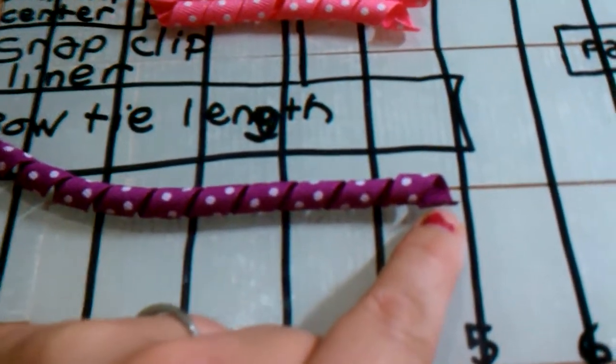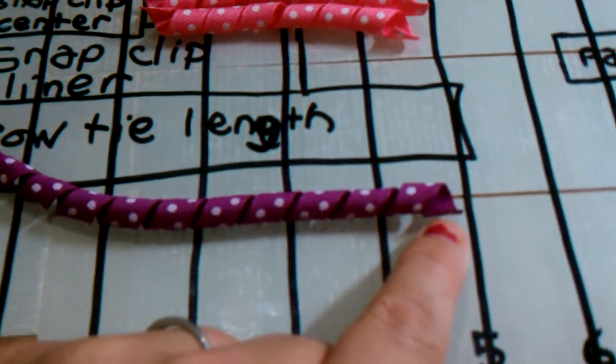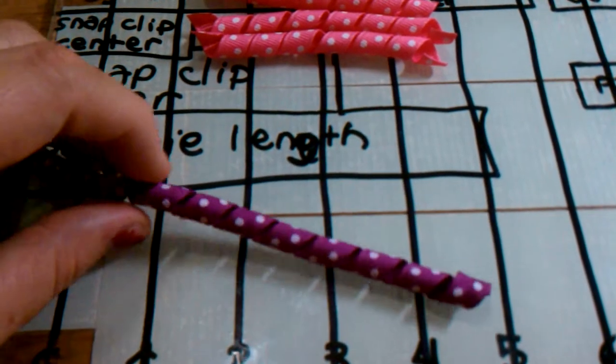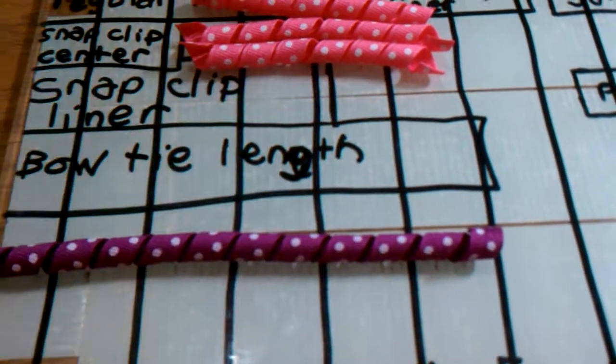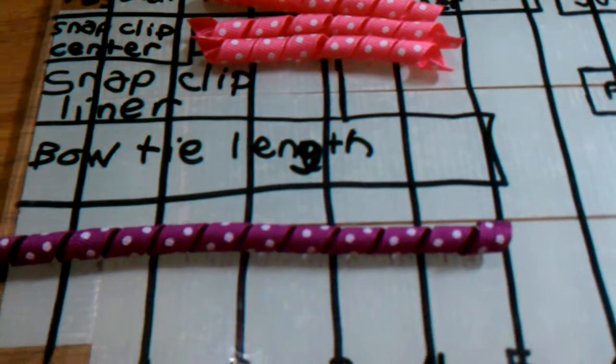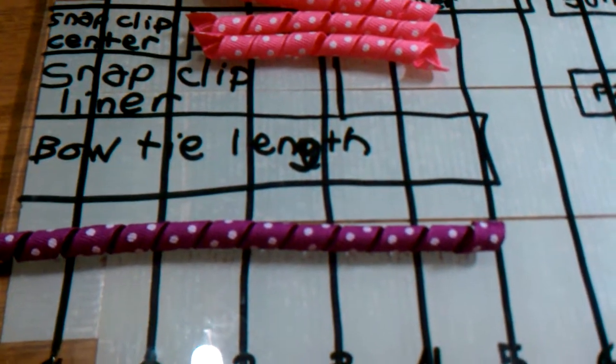So what I'm going to do is make sure my corker ribbon is facing this way. Now I'm going to count the number of loops in this corker strand.